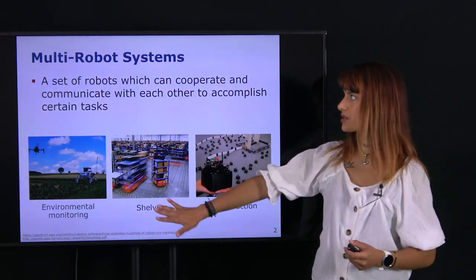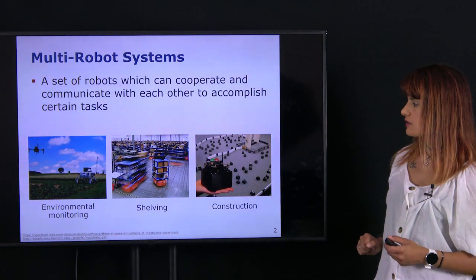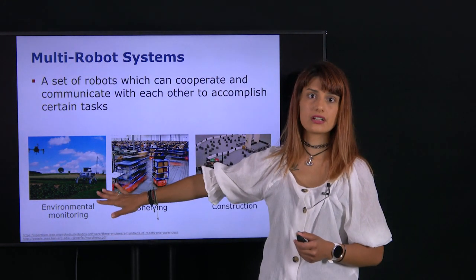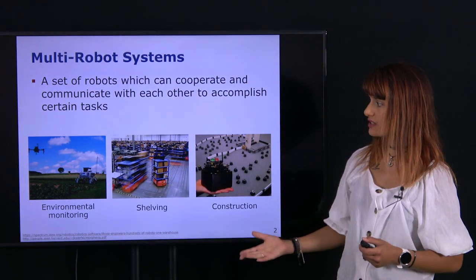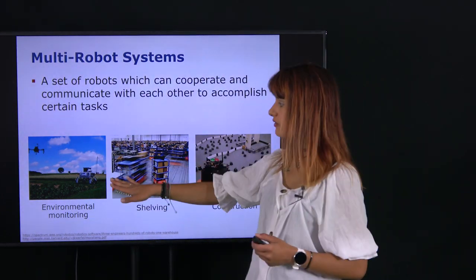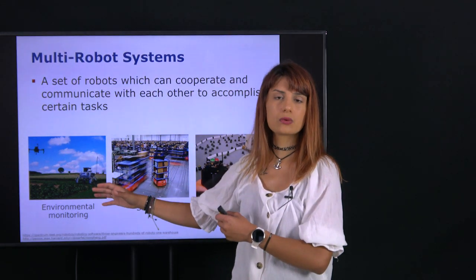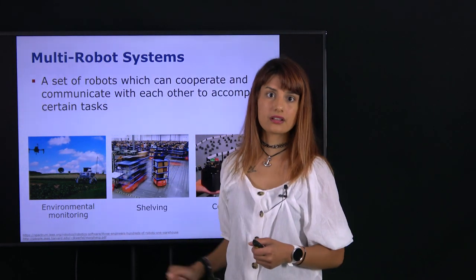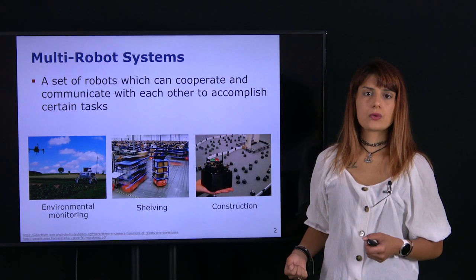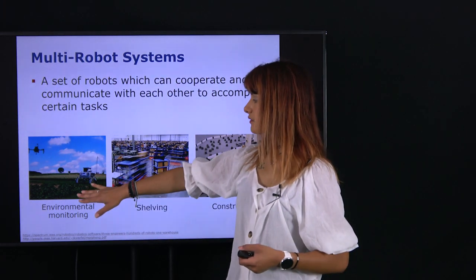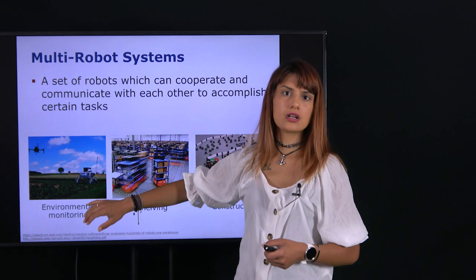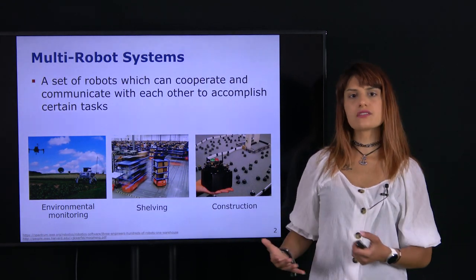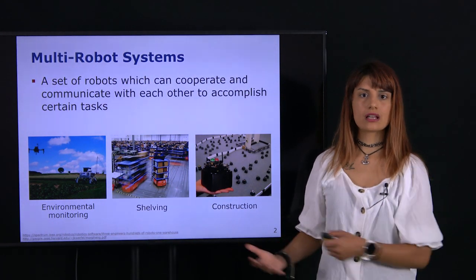Here are some examples of multi-robot systems. On the left we see an unmanned aerial vehicle, a UAV, and a ground vehicle working together on an agricultural field to perform environmental monitoring. These robots have different cameras and we can study how to fuse the information from their cameras to collaboratively build a map of the field and figure out where the interesting plants are. The ground vehicle could also be equipped with an end effector to perform intervention procedures such as weeding.